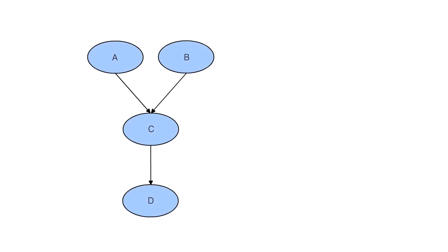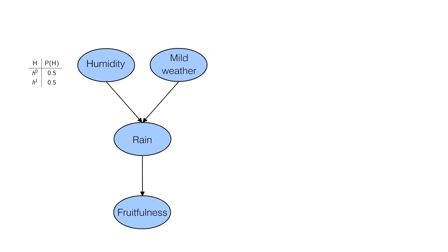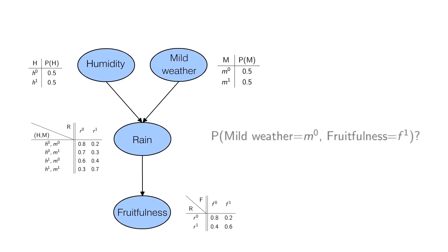How to find the probability of an event in a Bayesian network using forward sampling? Imagine you want to know the probability of a fruitful tree and a mild weather in the following Bayesian network.